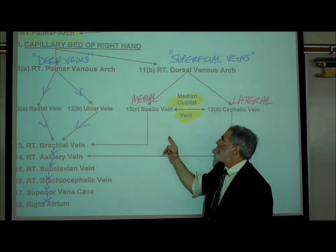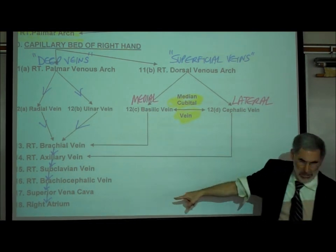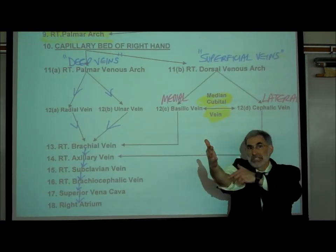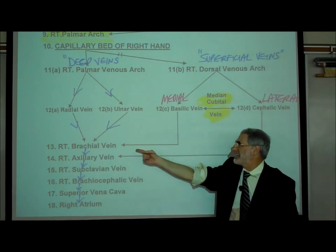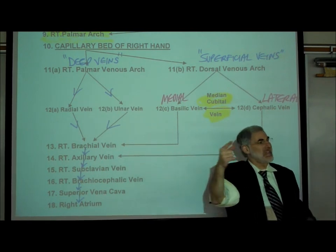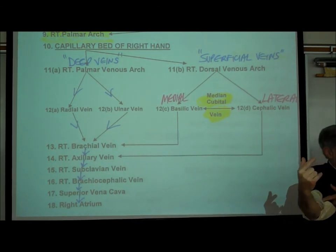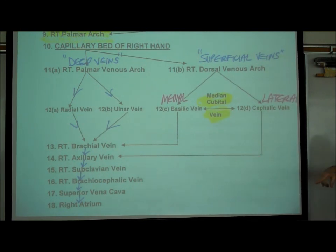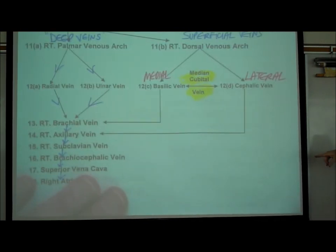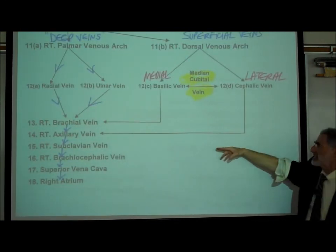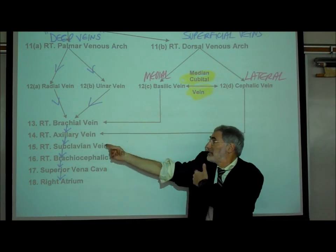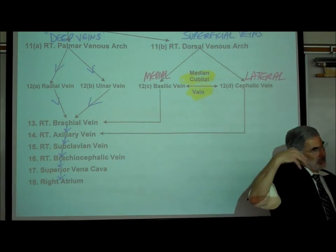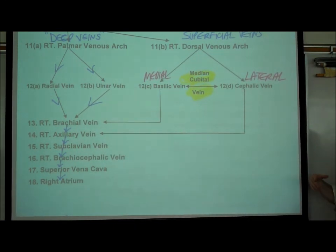The basilic vein connects — dives down deep — and connects to the brachial vein deep in the middle of the upper arm. The cephalic dives down deep and connects a little bit higher up to the axillary vein.